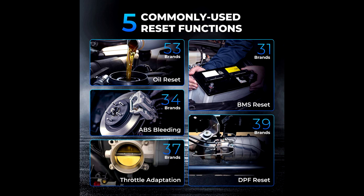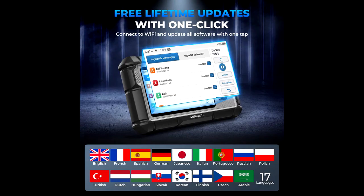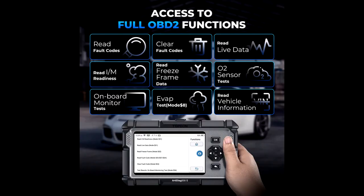The RD-DIAG 500S scan tool supports five maintenance services for mainstream vehicle models: oil reset, BMS reset, ABS bleeding, DPF reset, and throttle adaption. Oil reset covers 53 brands and resets an engine oil life tracking system once the oil has been changed.